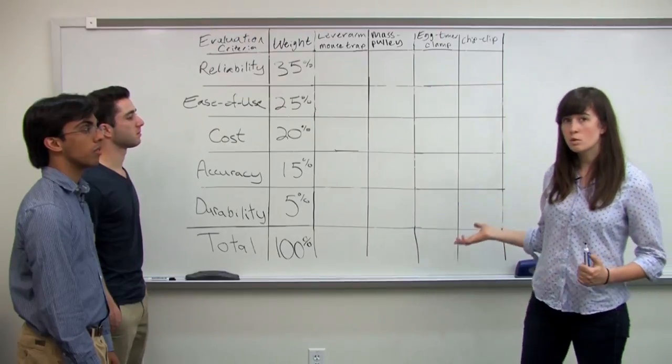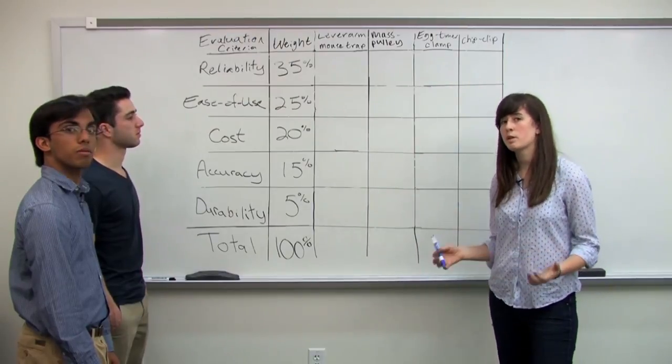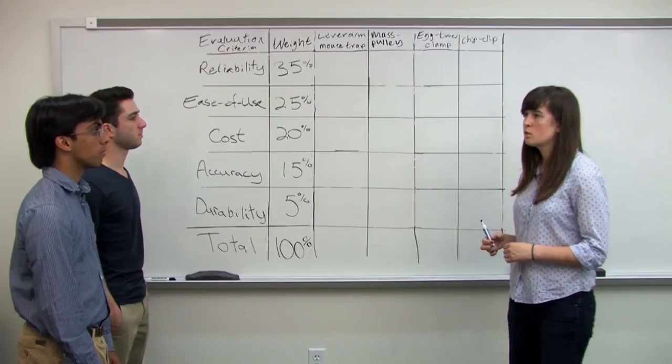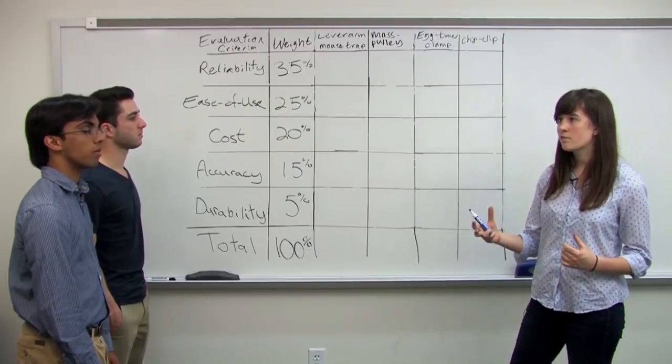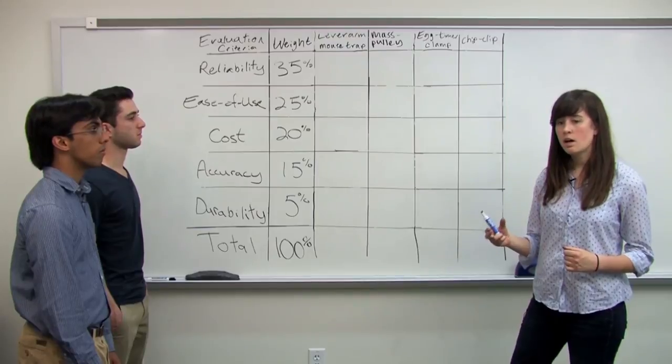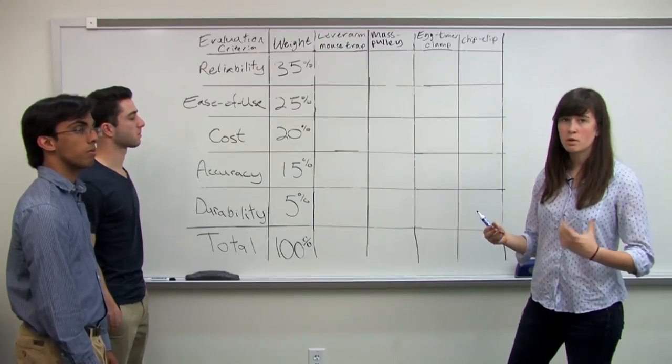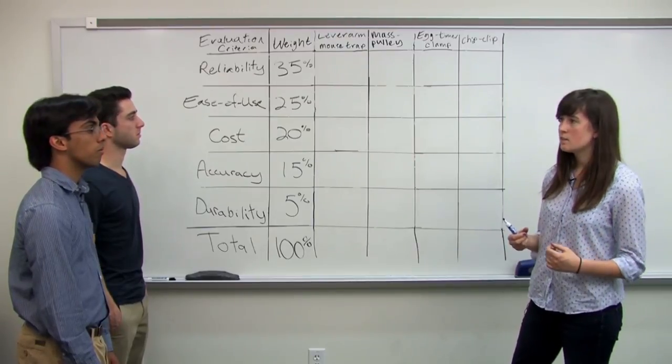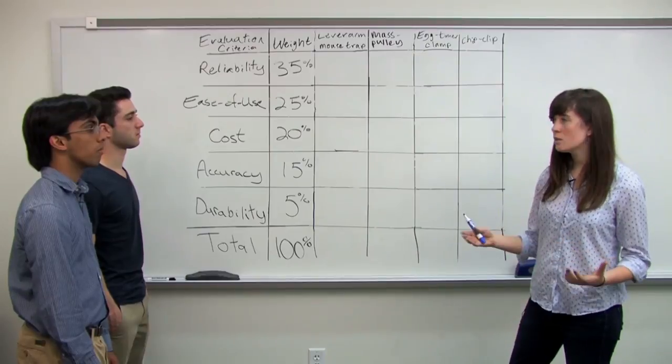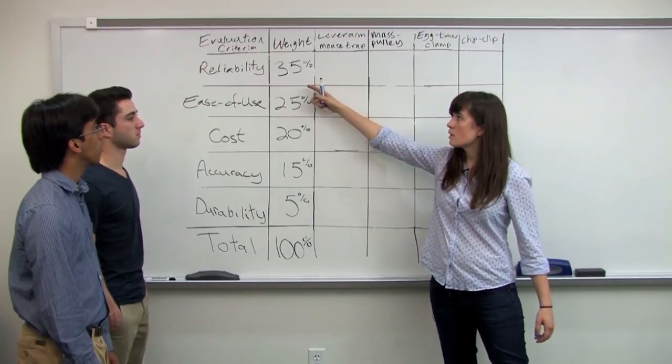With the scoring matrix, we're using a five-point scale. So we'll go from one to five, usually with five being the best score you can get and one being the worst. And these scores were predetermined for each of the criteria.